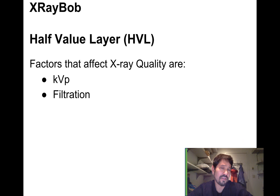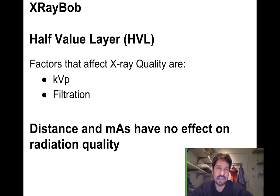Factors that affect our x-ray quality are KVP. If you set a higher KVP, you'll get higher energy x-rays and filtration. The more filtration you have, the more low energy x-rays you'll cut out and then the resulting spectrum will be of a higher quality. Distance and mass have absolutely no effect on radiation quality.